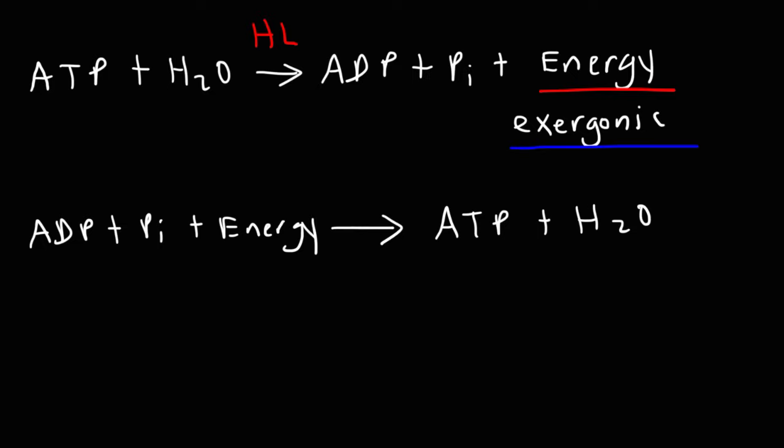So this process is a dehydration synthesis reaction because we're forming a bond and we're releasing water. We're forming a bond between the two phosphate groups. So because we're putting in energy or because energy is on the left side of the chemical equation, this is an endergonic reaction. We need energy to drive this reaction forward.